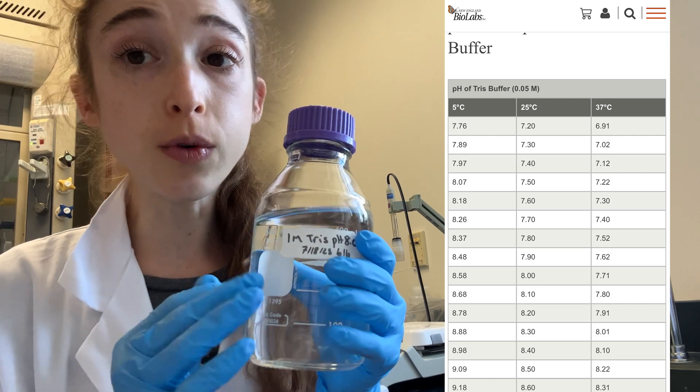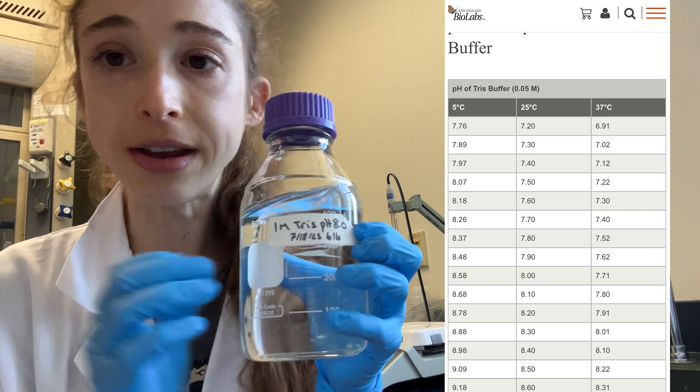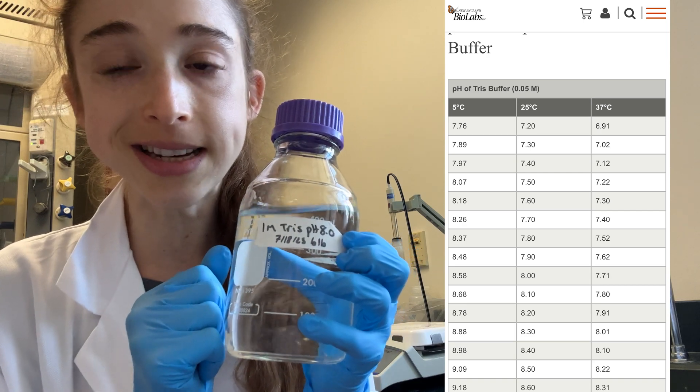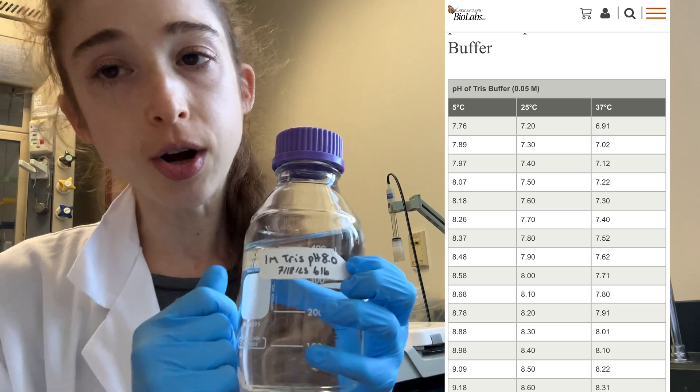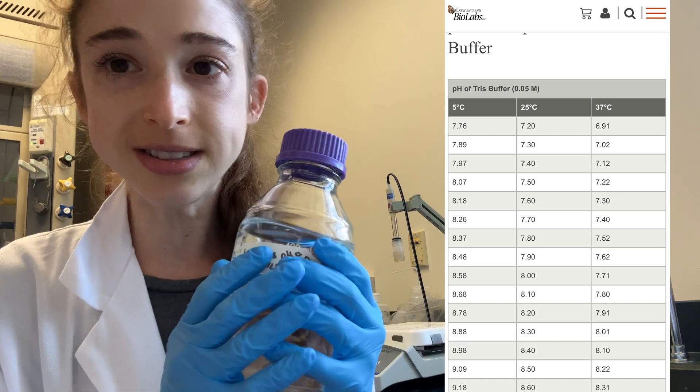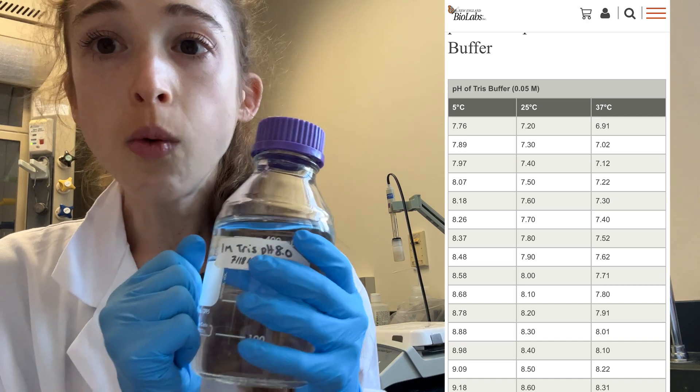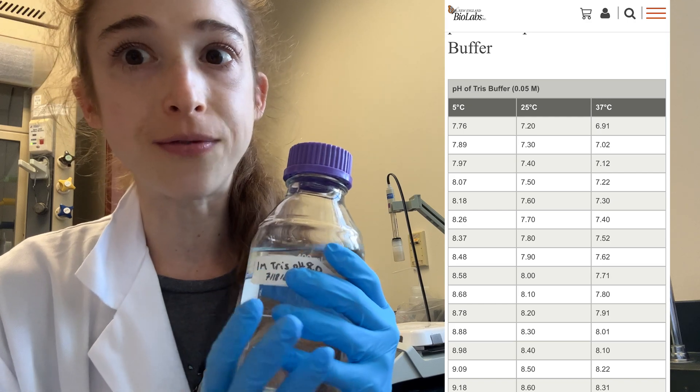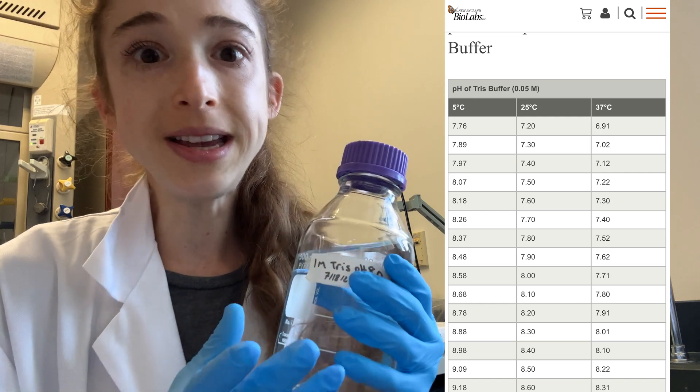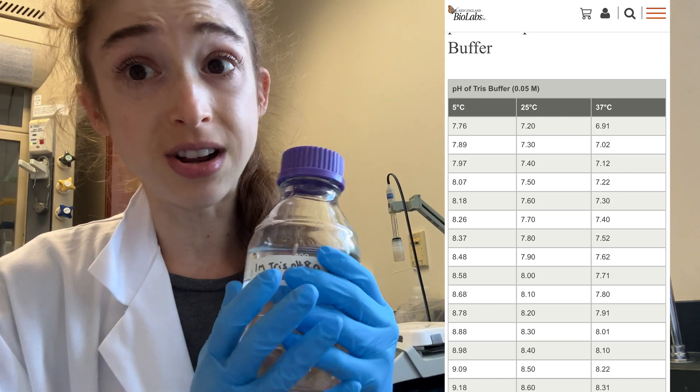This means that if you were to prepare your buffer to be a nice 8.0 at your room temperature, 25 degrees Celsius, and then you go and you use it when you're purifying a protein at 4 degrees Celsius because your protein likes the cold, well now your buffer is actually going to be at like 8.58, which means that there's going to be a lot fewer protons around.